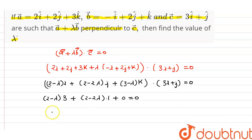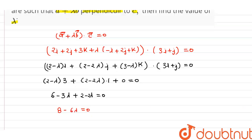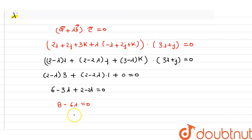So this gives us 6 minus 3lambda plus 2 plus 2lambda equals zero. Simplifying, we get 8 minus 6lambda equals zero, so 6lambda equals 8, and therefore lambda equals 8 over 6.